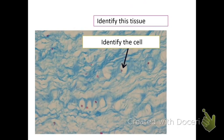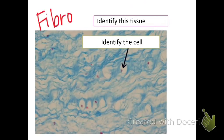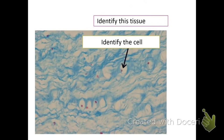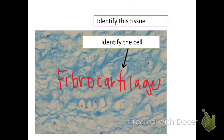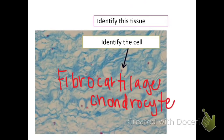Take a second and see if you can figure this one out. This one is fibrocartilage — that's all one word. And one cell is called a chondrocyte.